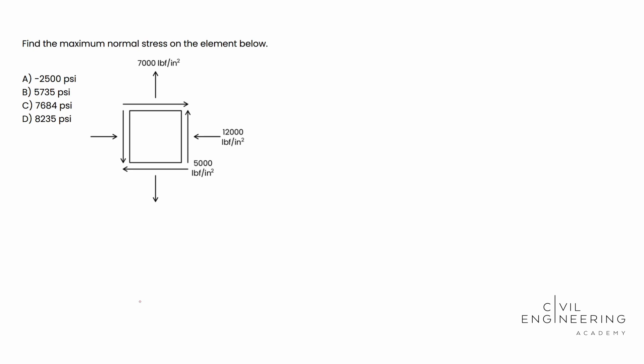Alright, so today we have a mechanics of material type of problem. This could be an FE or a PE problem. We're going to go ahead and go through both handbooks for that. And here's what the question says. Find the maximum normal stress on the element below. So right off the bat, looking at this, you should identify this as a Mohr circle problem. We see our four options available to us in PSI, so US units.